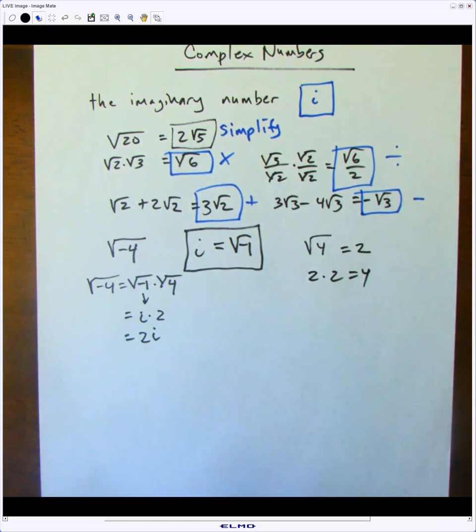Basically, when you see a negative inside the square root, get rid of the negative, make it positive, and replace it with an i, and do everything else the same as you would if it were positive.